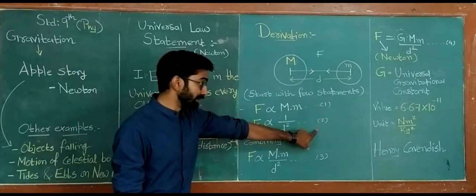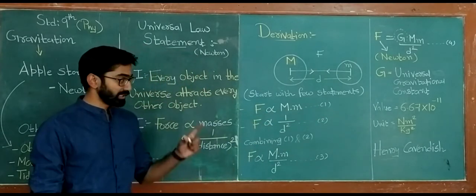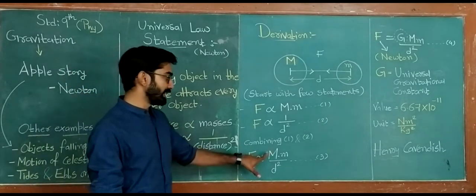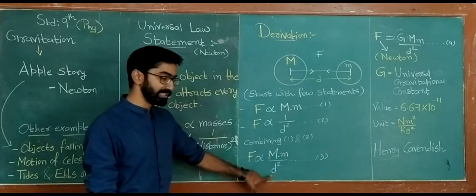Kindly give numbers to whatever step you are writing. Finally, combining these two steps, the final formula becomes: f is proportional to capital M into small m upon d square.